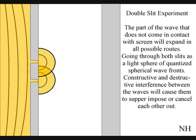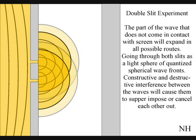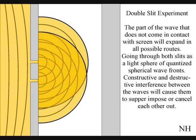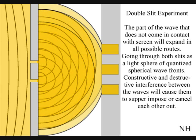Constructive and destructive interference between the waves will cause them to superimpose or cancel each other out. When this wave particle function comes in contact with the screen, it will collapse, creating moments of time and quantum particles in the shape of an interference pattern.